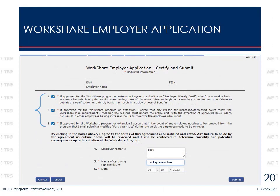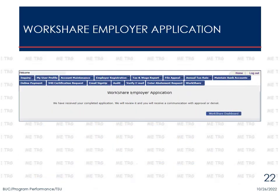Finalize the application by reviewing and checking the boxes on the Certify and Submit screen. Add additional remarks if desired. Sign the application by entering the name of the Certifying Representative, enter the date, and select Submit. The confirmation screen indicates the application has been successfully submitted. You will receive notification with approval or denial of the WorkShare Plan after the application has been reviewed by staff at the Bureau of Unemployment Compensation.